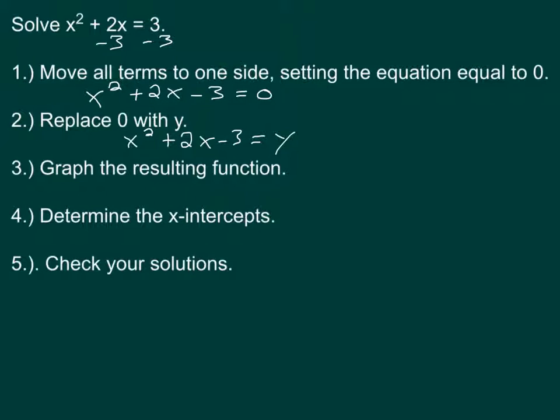Now in order to graph that function, we just go back to the way that we used to graph. From standard form, we'd use x equals negative b over 2a. So x equals negative 2 over 2 times 1, which is negative 2 over 2, which is negative 1.